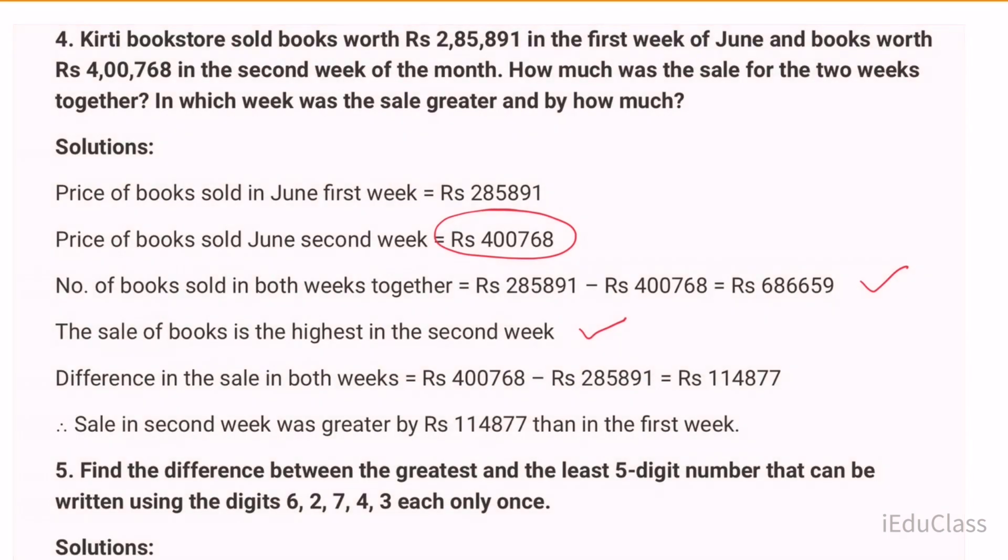Second week minus first week gives 400,768 minus 285,891 equals 114,877 rupees. Sale in the second week was greater by rupees 114,877 than in the first week.